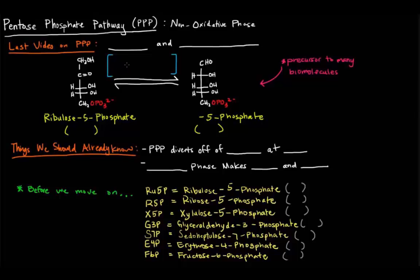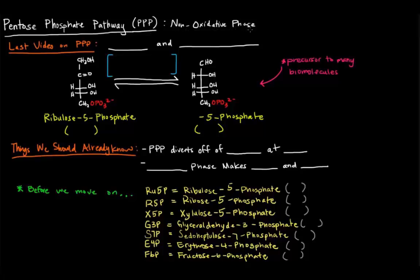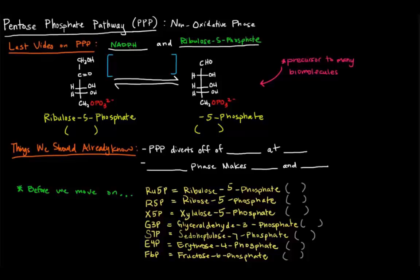In this video, I want to continue our talk of the pentose phosphate pathway and talk a little bit more about the non-oxidative phase, because in the previous video we focused more on the oxidative phase. We said the pentose phosphate pathway produced two things: NADPH and ribulose 5-phosphate. The NADPH provided reducing power for biosynthesis and anabolic pathways, and ribulose 5-phosphate was used as a precursor to nucleic acid synthesis.